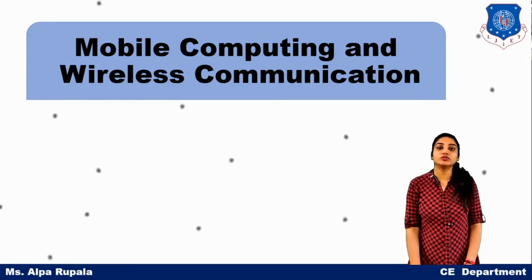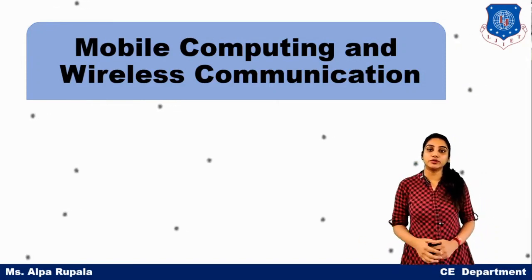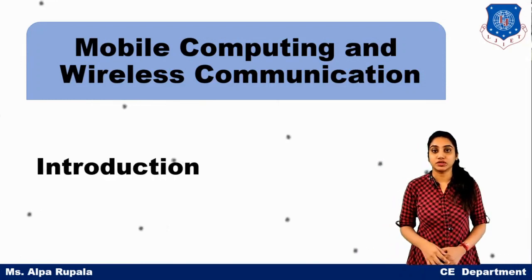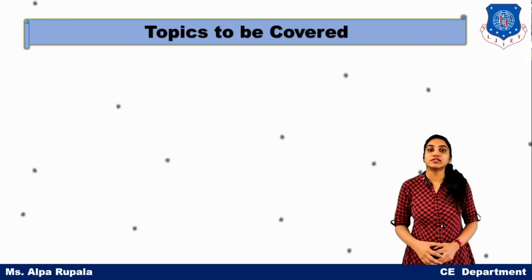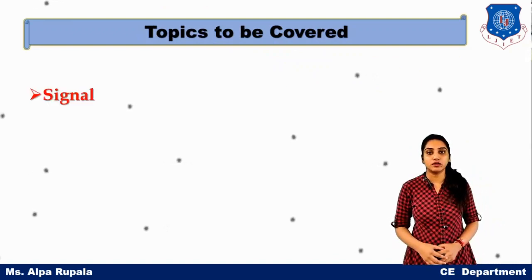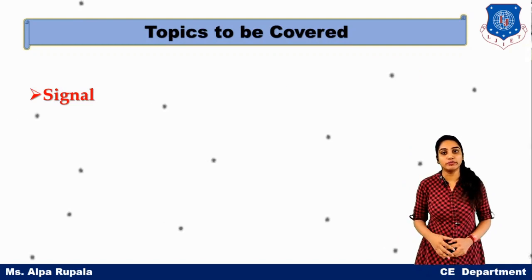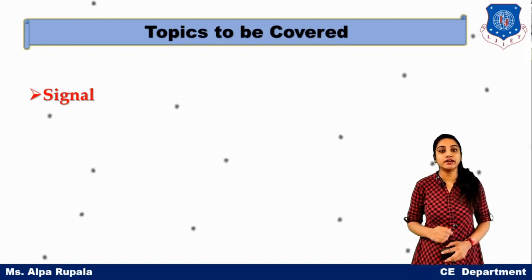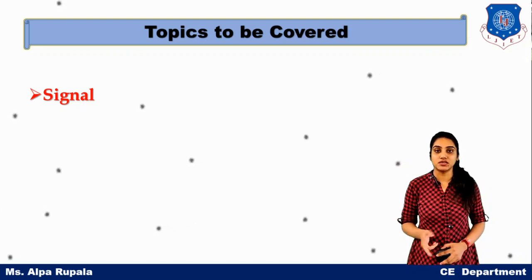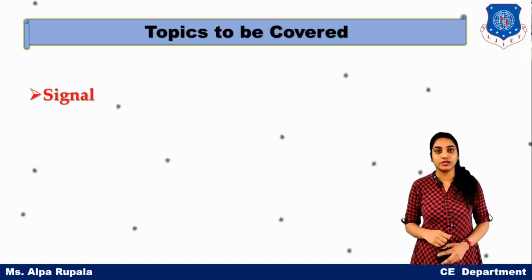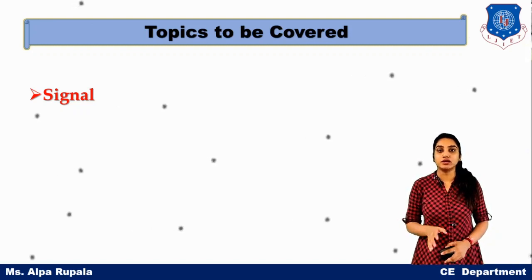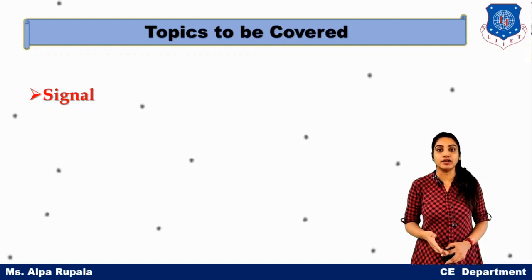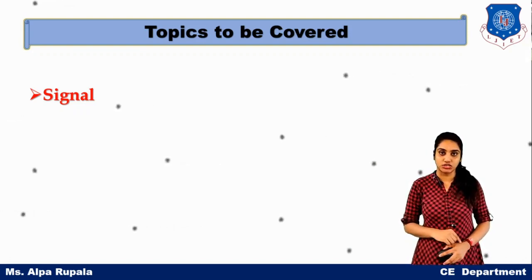Hello everyone, welcome to the lecture series of mobile computing and wireless communication. The topic is introduction. In the previous lecture, we have already learned about the signal. We have two types of signal: analog signal and digital signal. We can also divide the signal into two other types, that is periodic signal and aperiodic signal. In this lecture, we will understand the difference between periodic and aperiodic signal, and the difference between analog and digital signal.